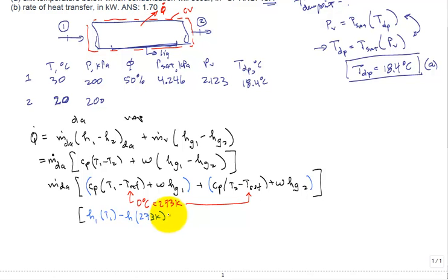And then continuing, we would have plus omega H G one, all of that is for the moist air enthalpy at the inlet state. And then we'd have plus, let me put it T two minus H of the air at the T reference.